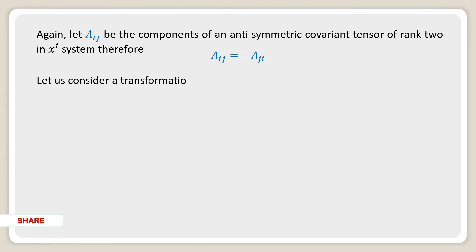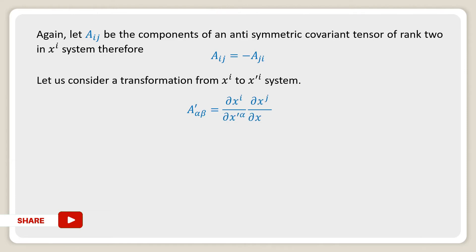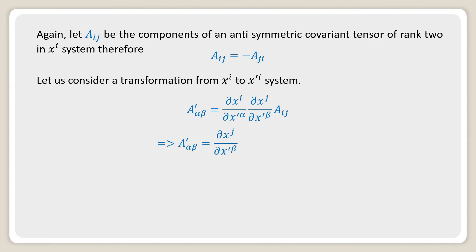Let us consider a transformation from the X^i to the X'^i system. Therefore, a'_{αβ} can be written in terms of the transformation law as (∂x^i / ∂x'^α) · (∂x^j / ∂x'^β) · a_{ij}. This implies a'_{αβ} = (∂x^j / ∂x'^β) · (∂x^i / ∂x'^α) · (−a_{ji}), because a_{ij} is anti-symmetric.